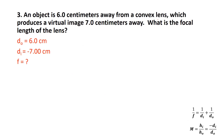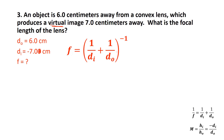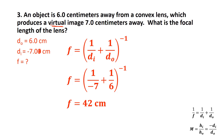Problem 3: An object is 6 centimeters away from a convex lens, which produces a virtual image 7 centimeters away. Virtual means DI is negative, so DI = −7 cm. What's the focal length? We rearrange for F and plug in: F = (1/−7 + 1/6) inverse. I type 1÷−7 = plus (1÷6) = to get 0.0238, then inverse that to get 42 centimeters.